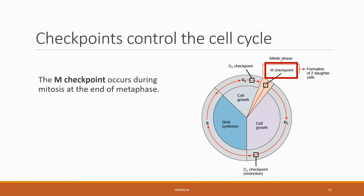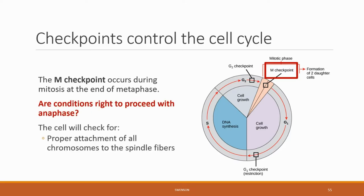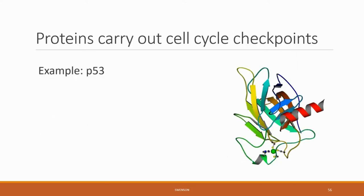The M checkpoint occurs during mitosis at the end of metaphase. The cell will be checking if conditions are right to proceed with anaphase. The cell will check for proper attachment of all chromosomes to the spindle fibers. These checkpoints are coordinated by a variety of proteins.